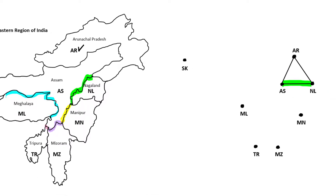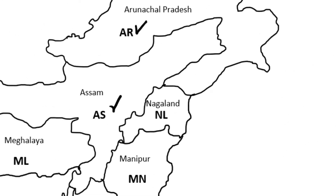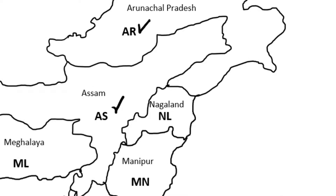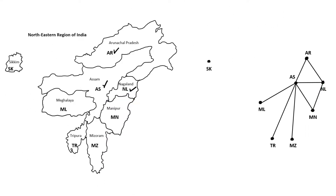AS connected to NL, AS connected to MN, MZ, and so on. Now we're done with AS, and we'll move on to another state. Let's try NL. We don't need to consider AR and AS because we've already formed connections to NL based on those. So we can just look at the states we have not finished yet. NL is sharing a boundary with MN, and that's the only remaining state it shares a boundary with. So we need to put in one edge between NL and MN. We're done with NL.